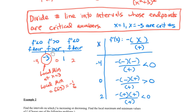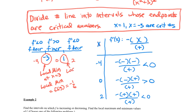Looking at x = 1: the function is increasing before it and decreasing after, so the curve increases, flattens out at 1, then decreases. That means there's a local maximum at x = 1. The local maximum value is f(1) — plugging 1 into the original function gives 1/2.